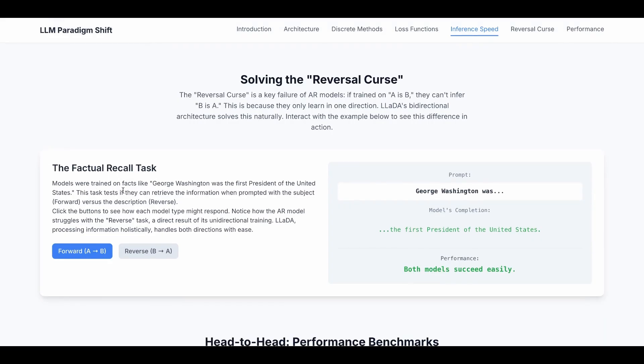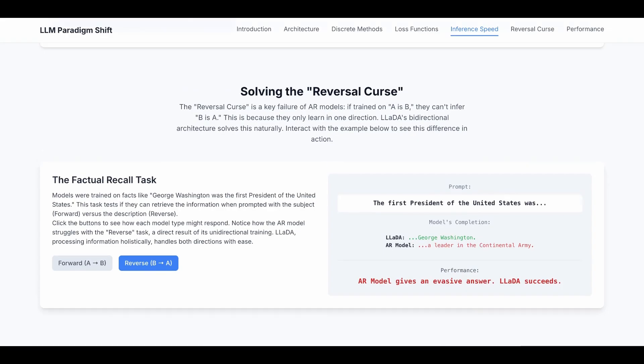For example, models were trained on facts like George Washington was the first president of the United States. If you ask the model George Washington was, both autoregressive and diffusion can tell you he's the first president of the United States. However, if you want to do the reverse, the first president of the United States was, most likely autoregressive won't be able to tell you the answer. Bi-directional based models can tell you it's George Washington.